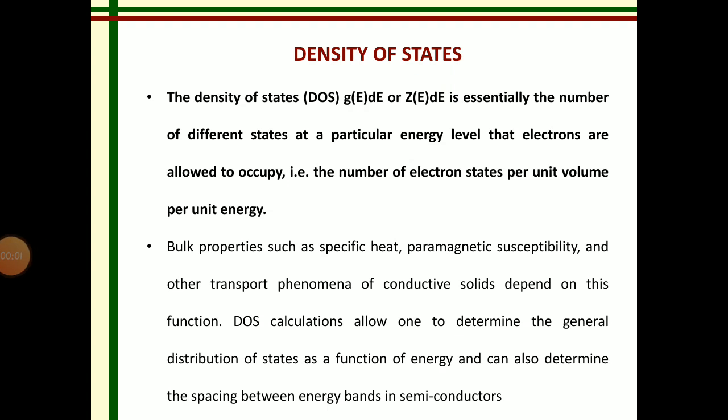Density of states is represented by g(E)dE or z(E)dE. It is defined as the number of different states that electrons are allowed to occupy — that is, the number of electron states per unit volume per unit energy. It is used to determine the distribution of states as a function of energy and can also determine the space between energy bands in semiconductors.